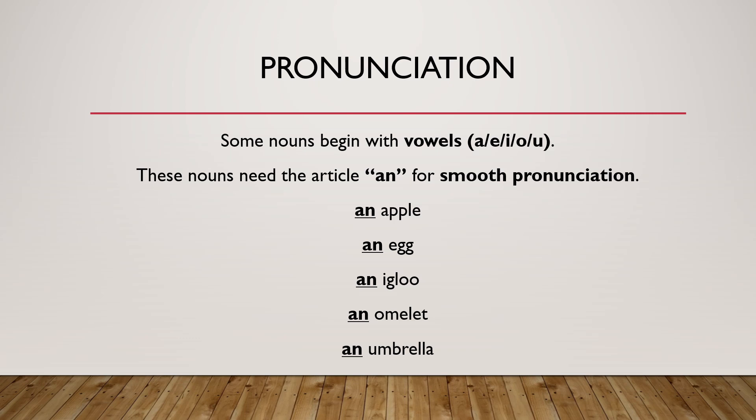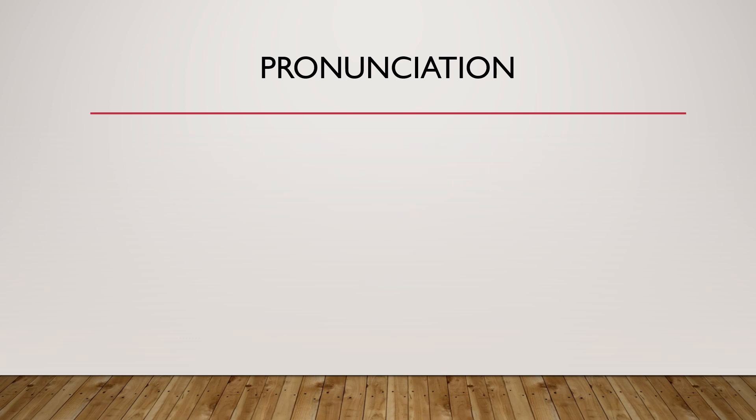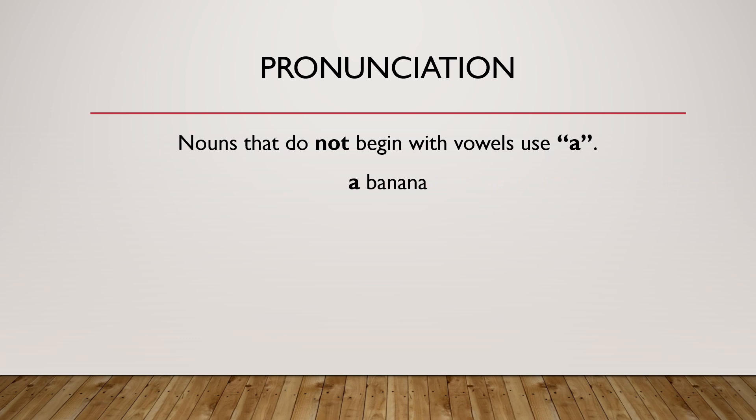An apple, an egg, an igloo, an omelette, an umbrella. Nouns that do not begin with vowels use a — a banana, a penguin.